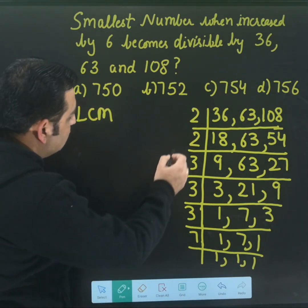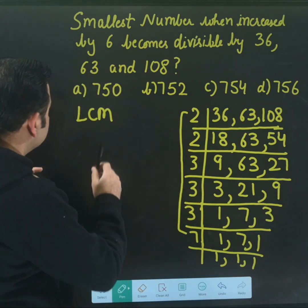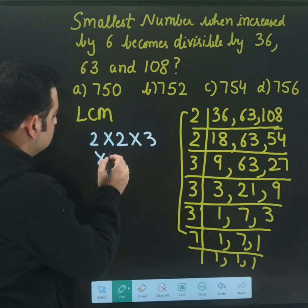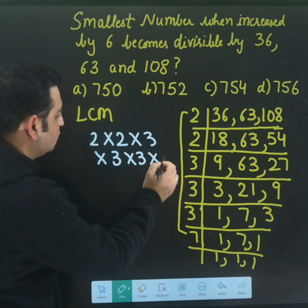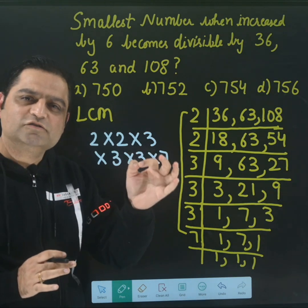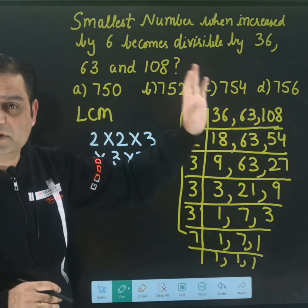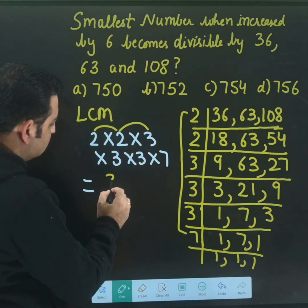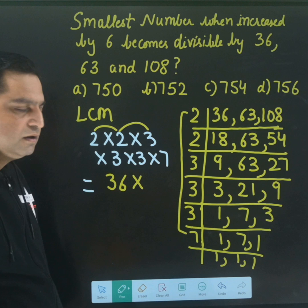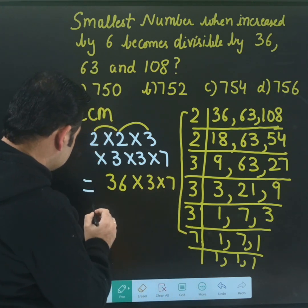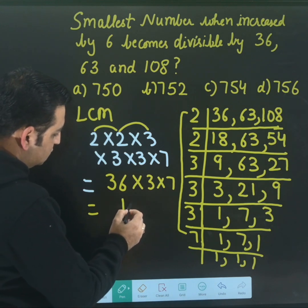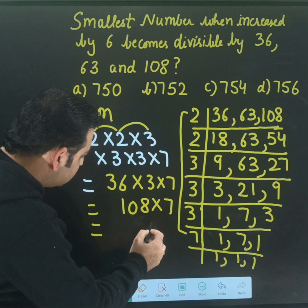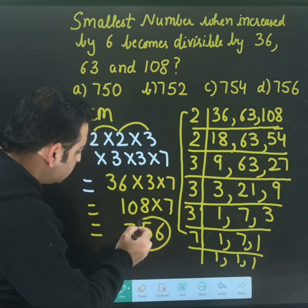So my LCM is the product of all these divisors. 2 is coming twice, 3 is coming 3 times, and at the end I have 7. So LCM = 2 × 2 × 3 × 3 × 3 × 7. Let me compute: 2 times 2 is 4, times 3 is 12, times 3 is 36, times 3 is 108, times 7 gives 756. So the smallest number divisible by 36, 63, and 108 is 756.